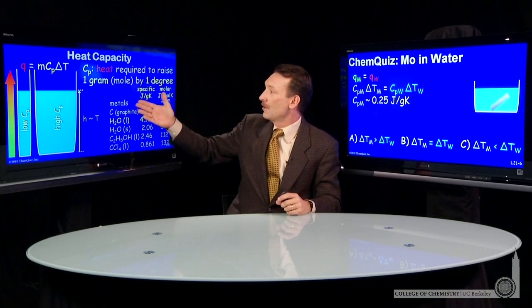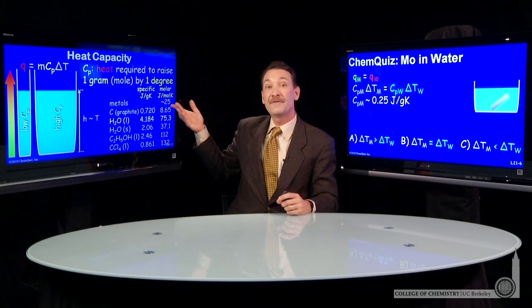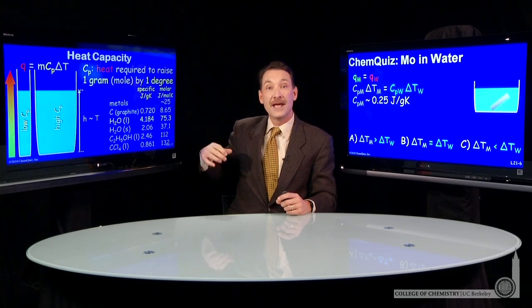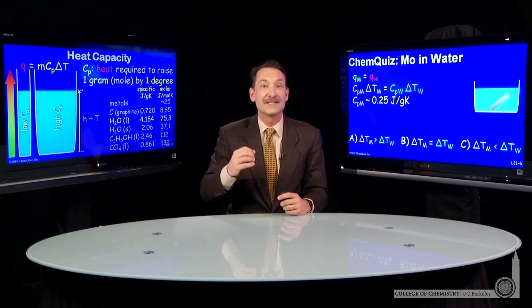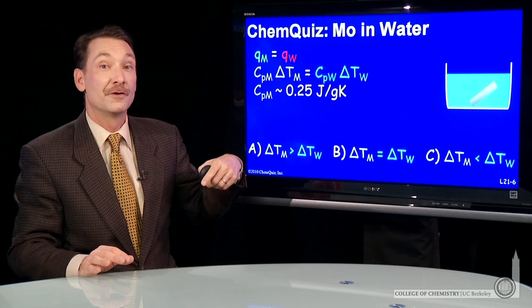If we go to a table, we find most metals have a heat capacity of about 25 joules per mole degree Kelvin. And molybdenum has a molar mass of around 100, so its specific heat capacity per gram is about a quarter of a joule per gram degree Kelvin.